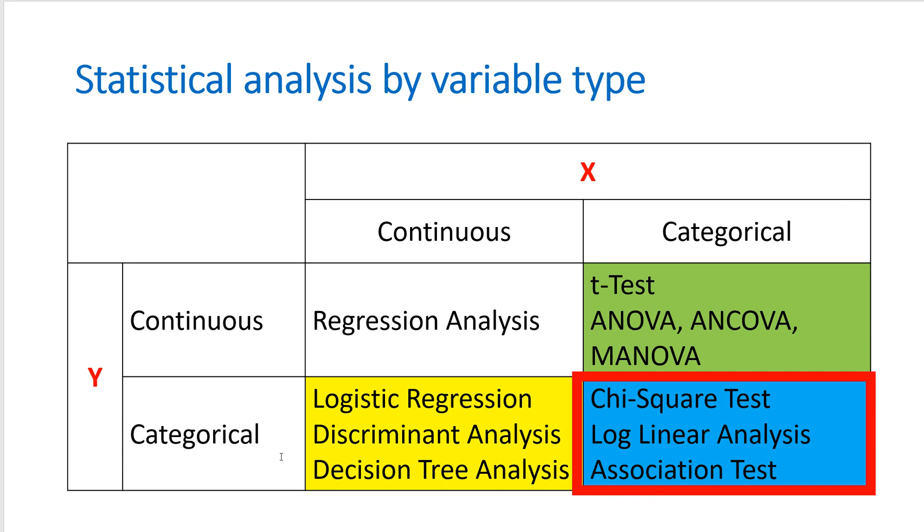Lastly, if both variables are categorical, we can explore the association between or among categorical variables. One commonly used statistical test to examine this association is the Chi-square test.